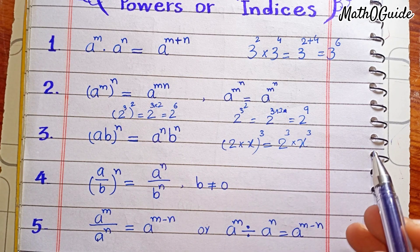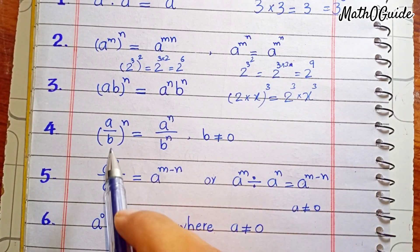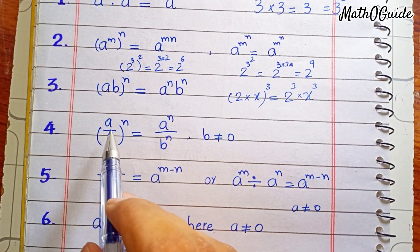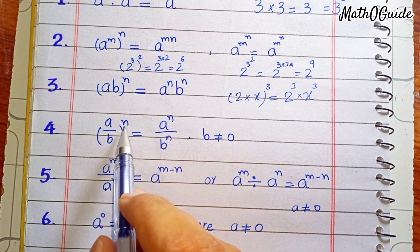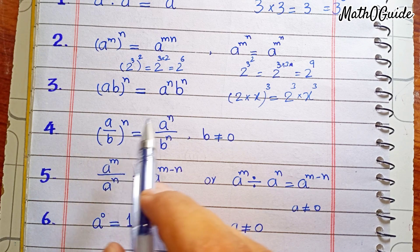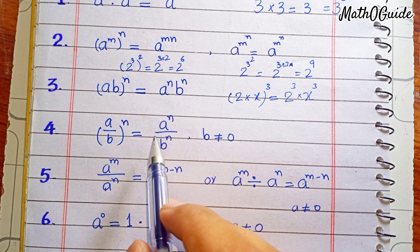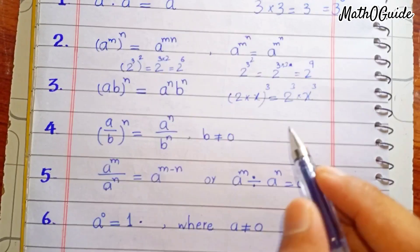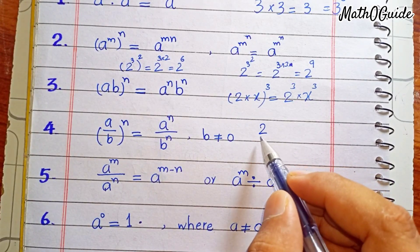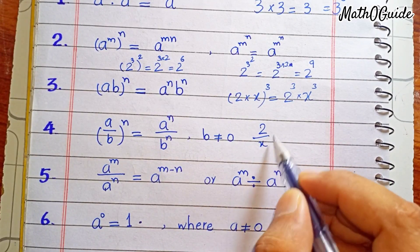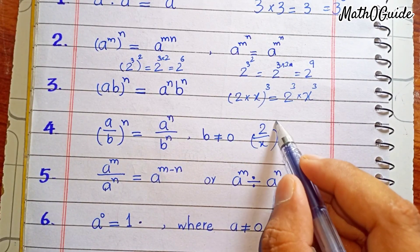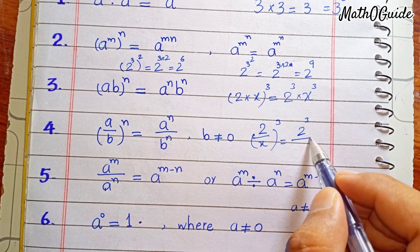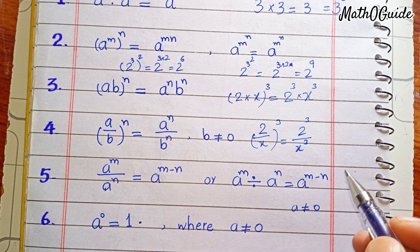The fourth rule is a divided by b, the whole raised to power n — meaning a is divided by b with a whole power. Similarly to multiplication, we can separate this term. For example, 2 divided by x, raised to power 3, gives 2 raised to power 3 divided by x raised to power 3.